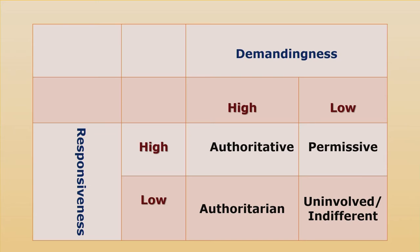When it comes to authoritarian parenting style, they are very high in demandingness but very low in responsiveness. For the permissive type, they are very low in demand but very high in responsiveness — they are very nurturing. When it comes to the last type, uninvolved or indifferent parenting style, they are low in demand as well as low in responsiveness, meaning they don't demand anything and at the same time have no responsiveness toward their kids.